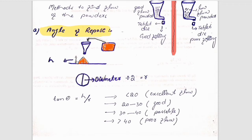We find the height of the heap and then we find the diameter of the heap. We divide the diameter by two to get the radius. The formula for the angle of repose is: tan θ = h / r, where h is the height of the heap and r is the radius of the heap. If we get a value of tan θ less than 20, there will be excellent flow.